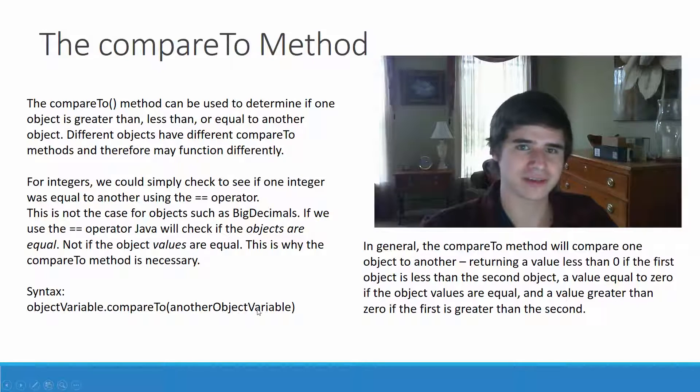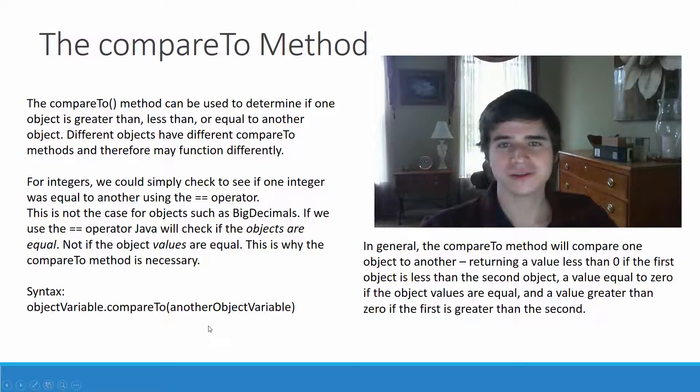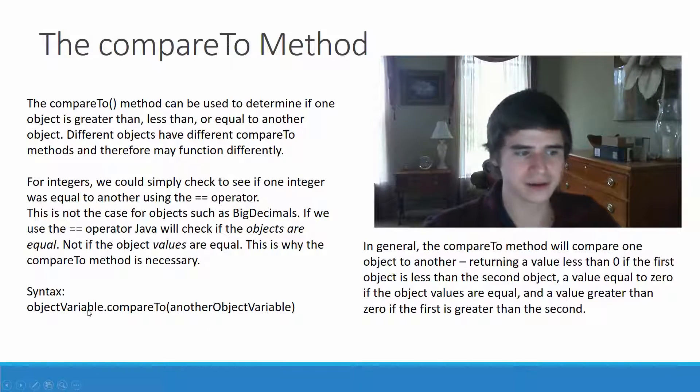And this will return a value less than zero if the first object is less than the second object, a value equal to zero if the first object is equal to the second object, and a value greater than zero if the first object is greater than the second object.